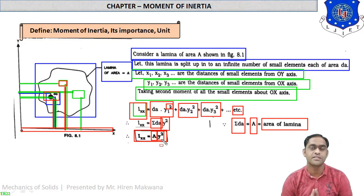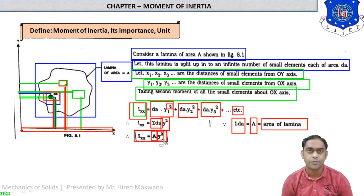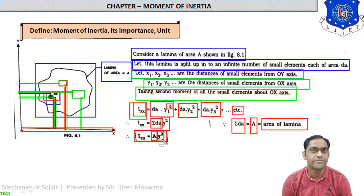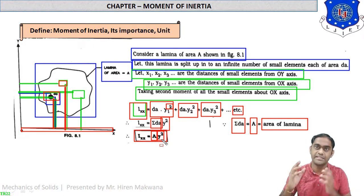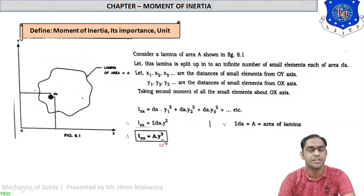We have discussed moment of inertia about the X axis. It is also possible to find moment of inertia with respect to the Y axis or with respect to any other axis. The name changes accordingly. Here it is IXX, but it may be IYY, IZZ, IAB, or IG — where G means centroidal. So it varies with respect to the axis.